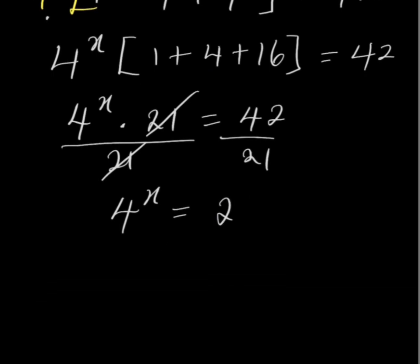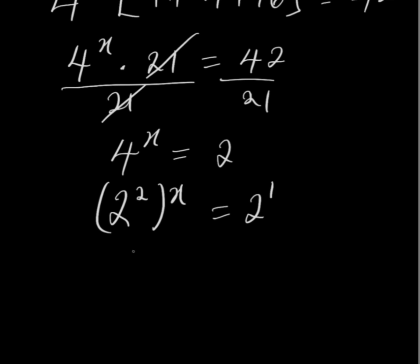Now, from laws of indices, I can write 4 as 2 to the power of 2. Then, you have a power of x outside. Equal to 2 can be written as 2 to the power of 1 because 2 power 1 is still 2. Then, 2 power 2 times x is 2x equal to 2 to the power of 1. So, because the bases are the same automatically, the power 2x should also be equal.